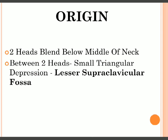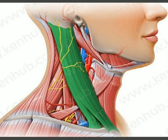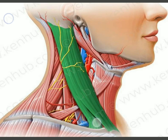Both heads blend together in the middle of the neck. Between the two heads there is a small triangular depression referred to as the lesser supraclavicular fossa — 'lesser' because it is small in size, 'supraclavicular' because it is above the clavicle, and 'fossa' because it is a depression.